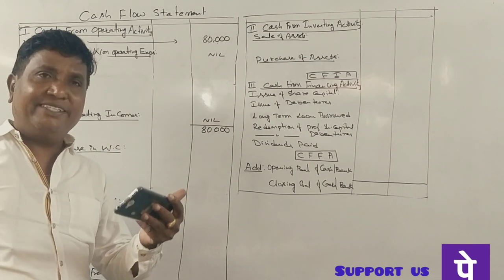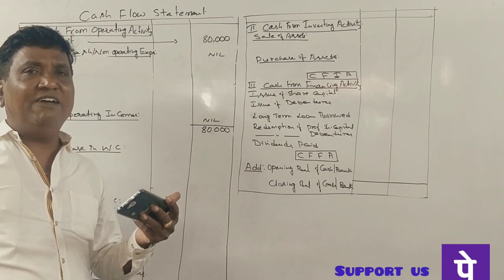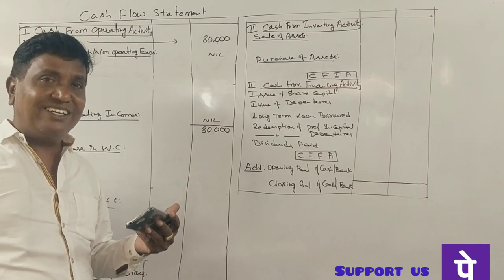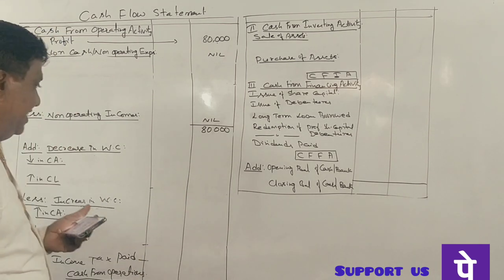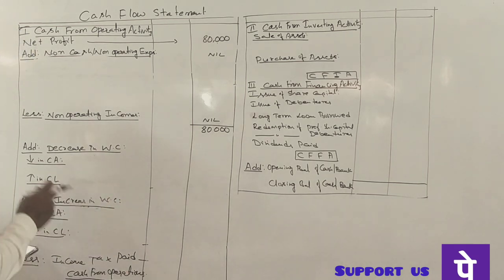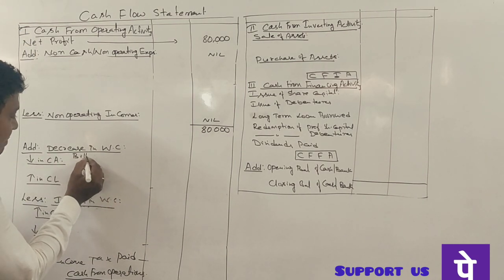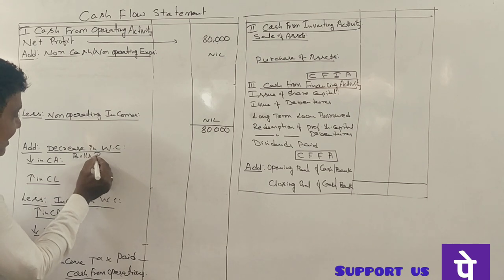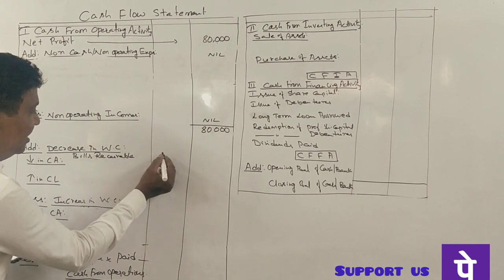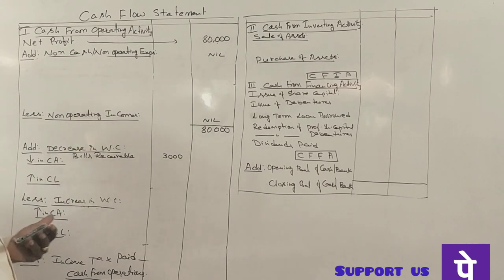Bills receivable: 60,000 in the previous year and 57,000 in the current year — a decrease of 3,000 rupees. Bills receivable is a current asset. A decrease in current asset leads to a decrease in working capital by 3,000 rupees — wait, a decrease in current asset means working capital decreases by 58,000 rupees. Decrease in working capital means addition to cash from operations.